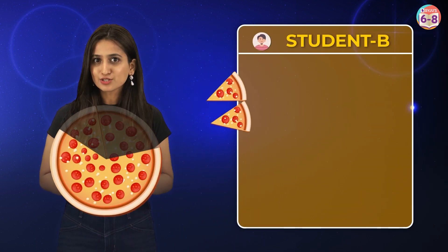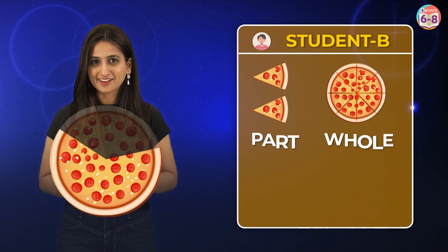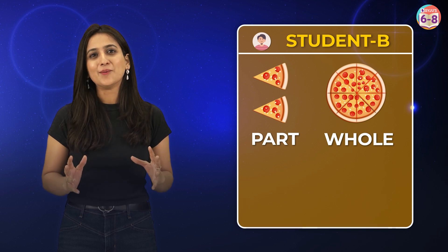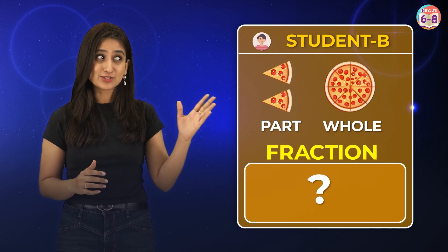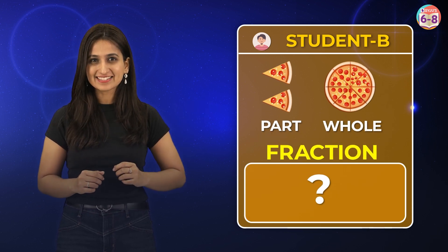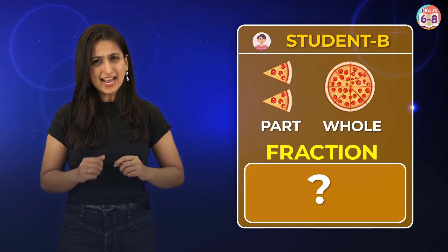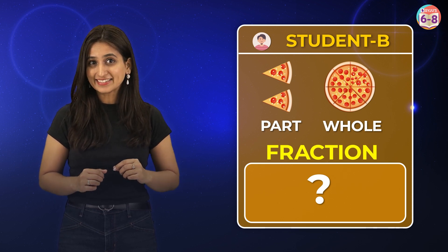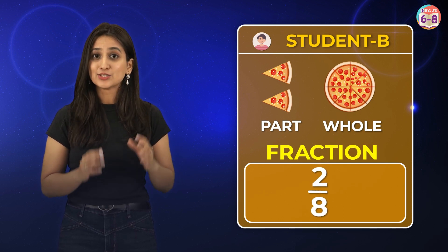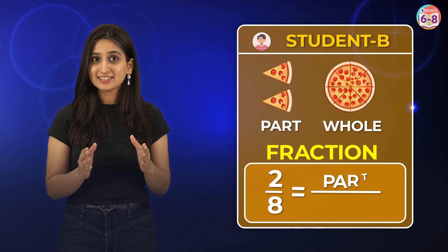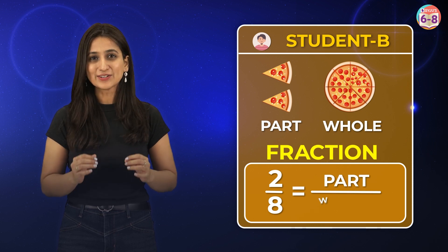Now let's take it a bit further. We give student B 2 slices of pizza. What's the fraction of the whole pizza that student B has? As we learnt earlier, we can write it as 2 by 8 — 2 is the part and 8 is the whole.